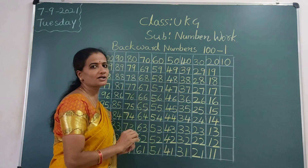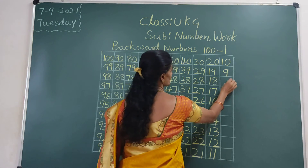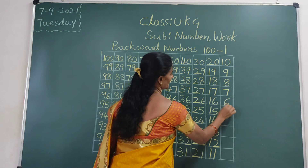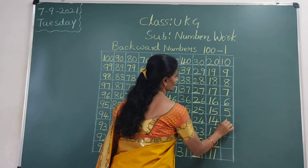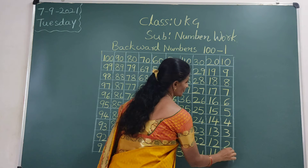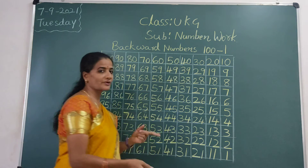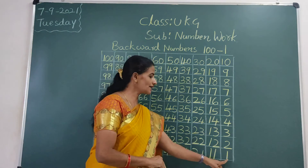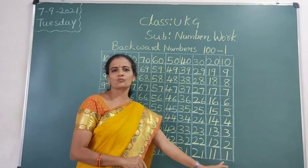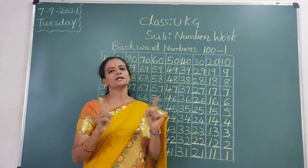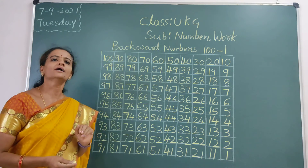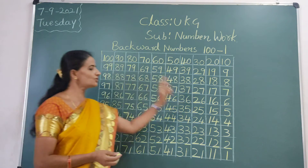Yes — 9. Reverse number: 8, 7, 6, 5, 4, 3, 2, 1. So in the previous class we wrote 1 to 100, and now 100 to 1 — backward numbers. What is this? Backward numbers, 100 to 1.